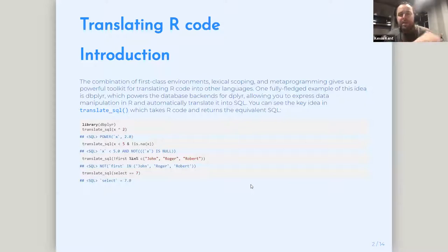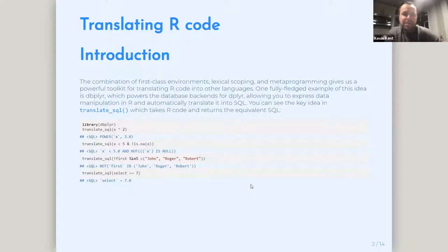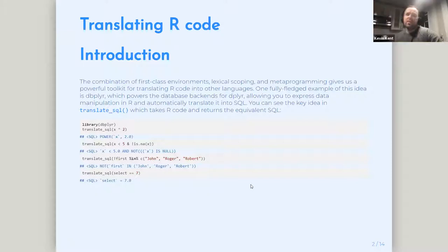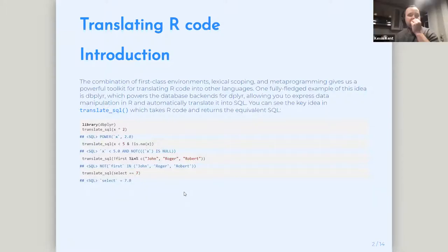Can I ask you a question? Sorry to interrupt, but this term here — first-class environments — when I read that, I would want to look it up. Is that referring to like the data masking, the tidy evaluation stuff? I think it's because the environments are objects. Like when we speak about first-class functions, it's because functions are the same thing as environments — they're like any other objects. They can be called and transformed. I was confused about that, but that makes sense.